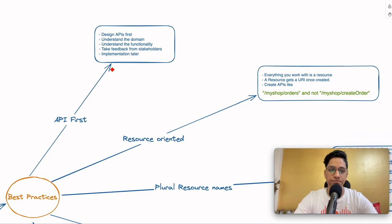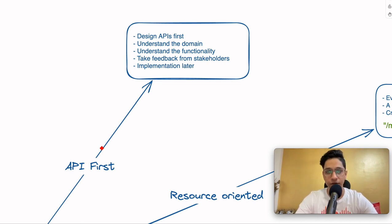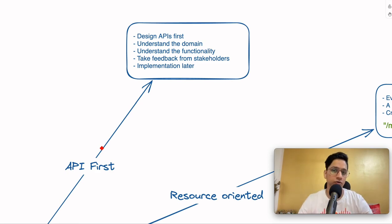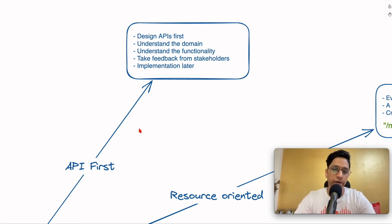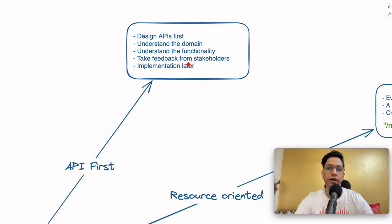Let's talk about API first. API first is not necessarily tied to REST APIs — it can be any API development. It's an approach where you think about the API design itself right before you even start thinking about the implementation. Think about the APIs, what kind of contract you want to support, what your stakeholders want to support, and then design the APIs first. Understanding the domain and the functionality you are providing is critical. You don't want to jump to implementation before you understand the domain and the contract your users are expecting.